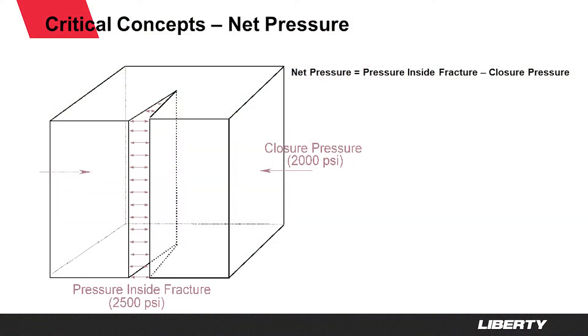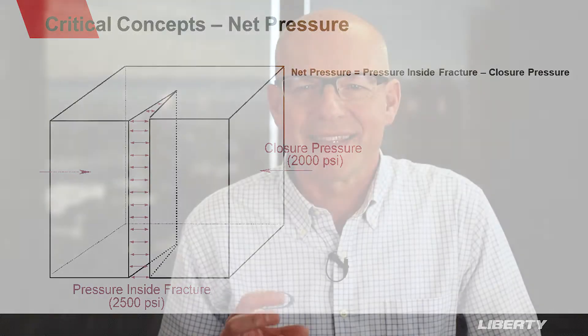The most important indirectly measurable parameter for fracture growth is net pressure. In essence, net pressure is the pressure inside the fracture minus the closure stress — illustrated here by this cartoon picture where you can see the pressure inside the fracture at about 2500 psi and a closure stress pushing the fracture closed at about 2000 psi. That means there's a net opening pressure of 500 psi that is responsible for creating fracture dimensions. That's the pressure we want to know, and it ties directly to fracture dimensions, especially fracture width.